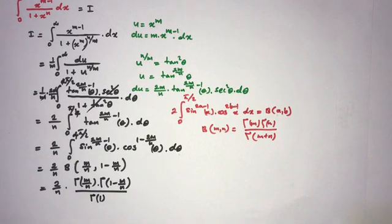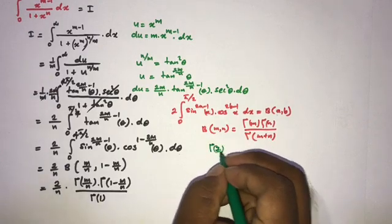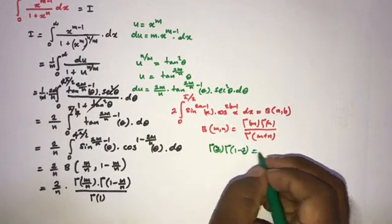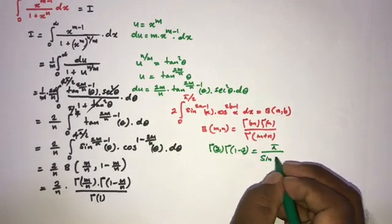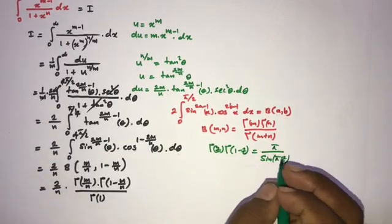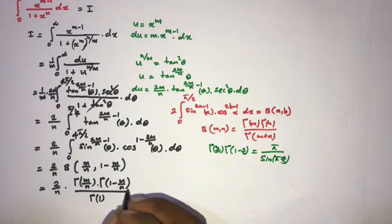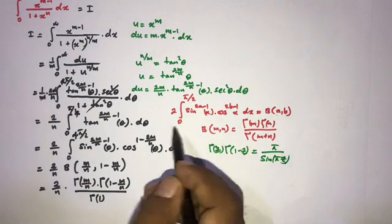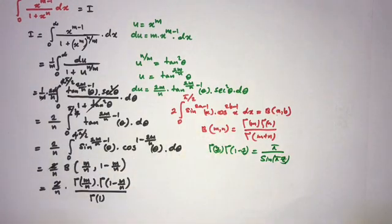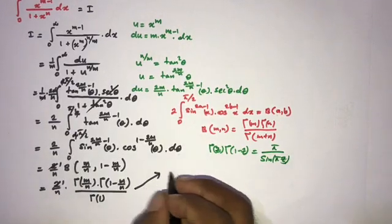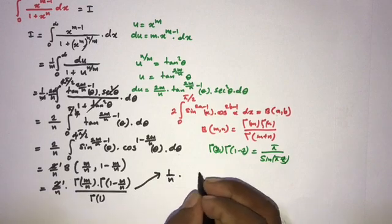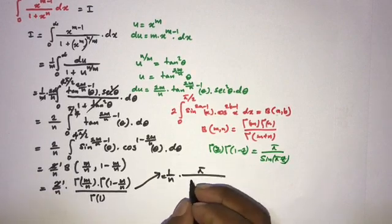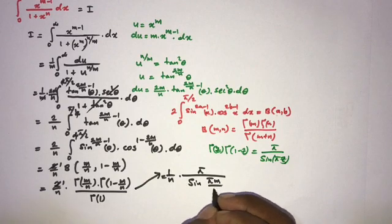Now we apply Euler's reflection formula: gamma of c times gamma of 1 minus c equals pi over sin of pi c. There is also a correction — the factor of 2 cancels, leaving 1 over n. Plugging in, the final result is 1 over n times pi over sin of pi m over n.